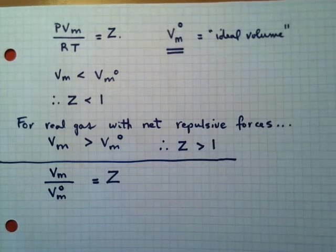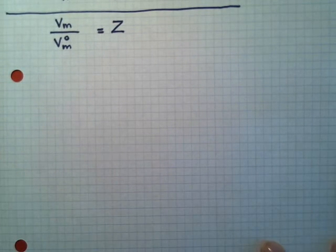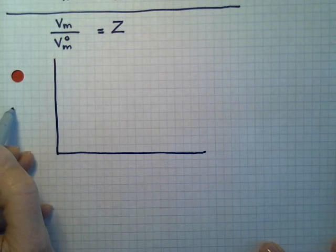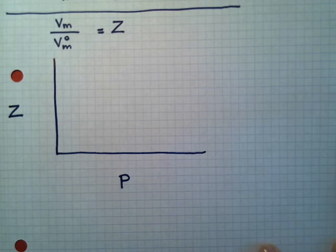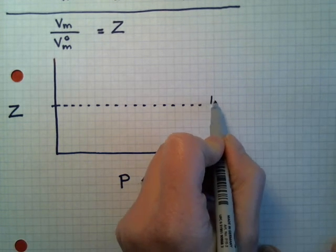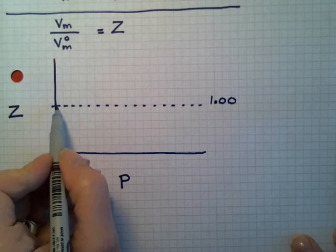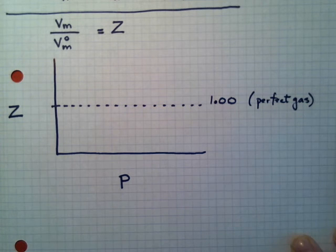Let's actually sketch the dependence of the compression factor for different gases with pressure. This is one of the learning outcomes you need to be able to achieve. Our reference point, I'm going to draw it as a dashed line, is 1.00. Normally the compression factor is written with two decimal places, three sig figs. This Z would be for a perfect gas.